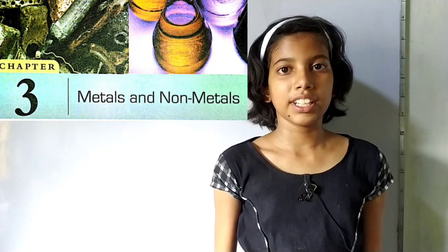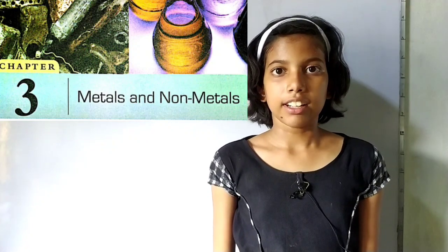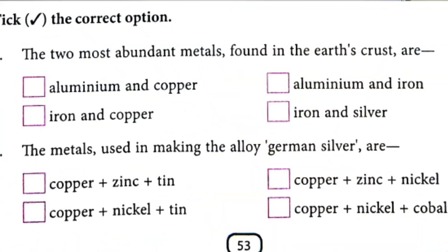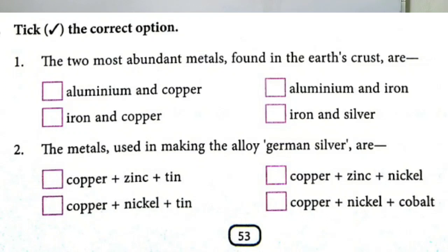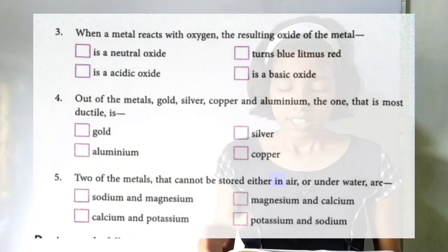Now we are going to enter section C which is tick the correct option. First, the two most abundant metals found in the earth's crust are aluminum and iron. Second, the metals used in making the alloy German silver are copper plus zinc plus nickel.